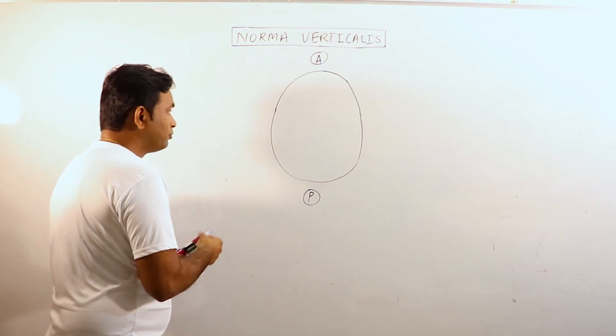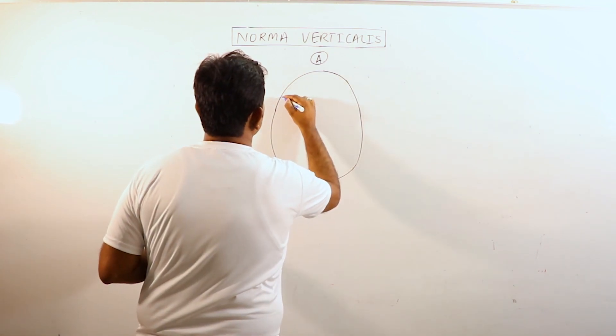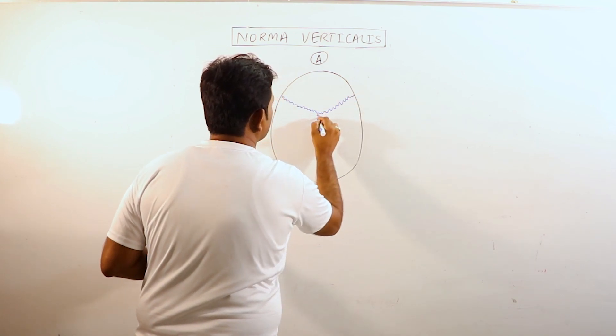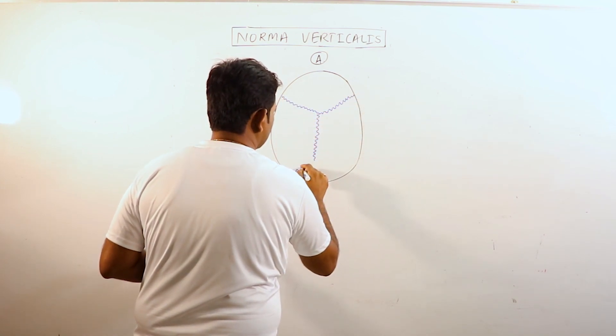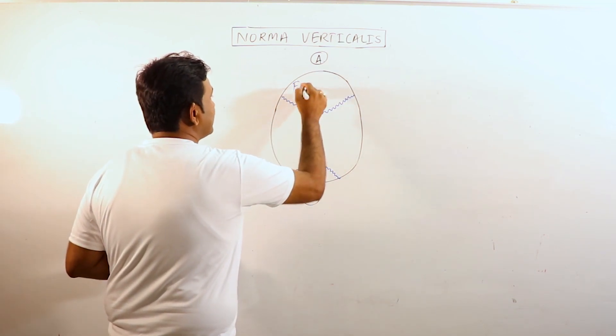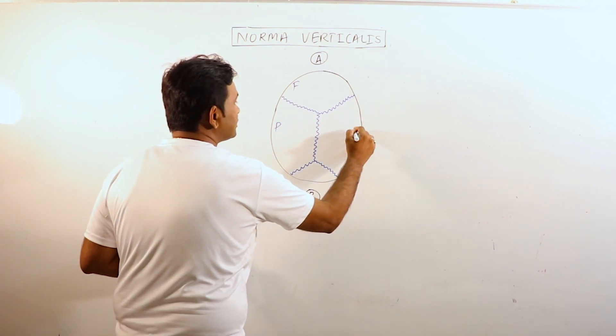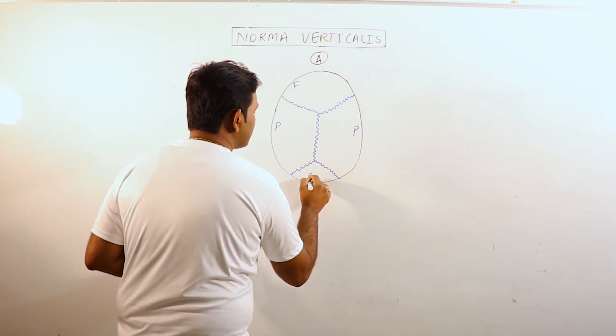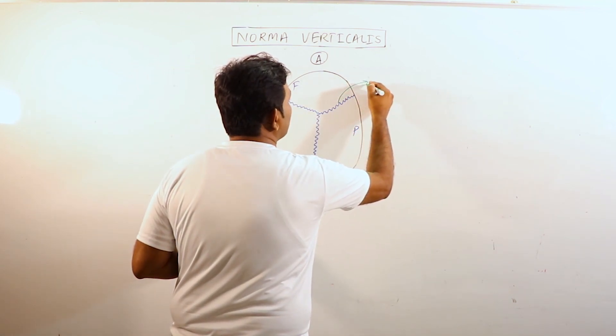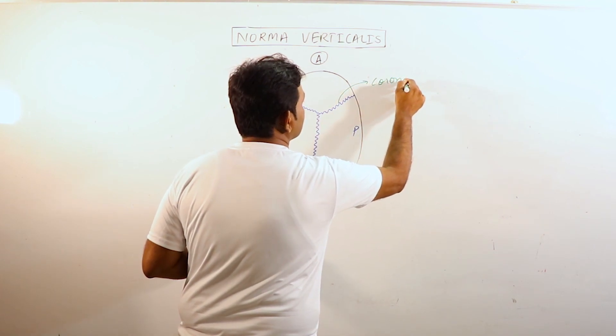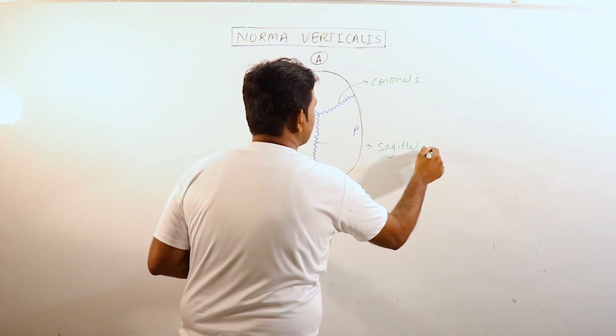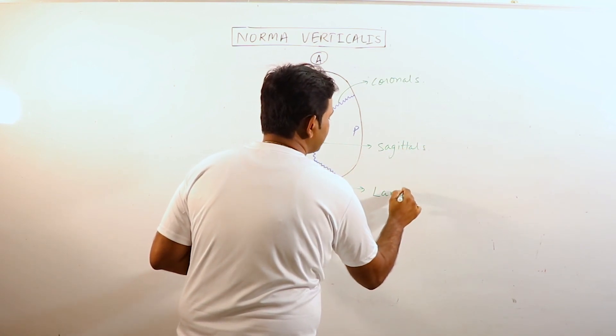You can observe some cranial bones and the sutures in this aspect. This is frontal bone, these are parietal bones and this one is occipital bone. The sutures are: this is coronal suture, these are sagittal sutures and this one is lambdoid suture.